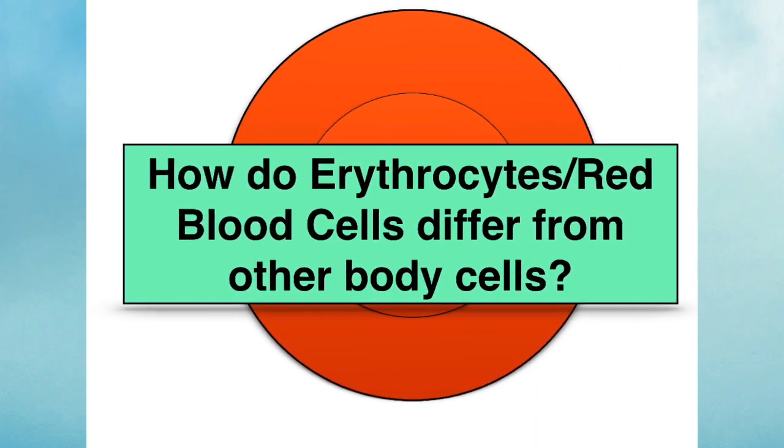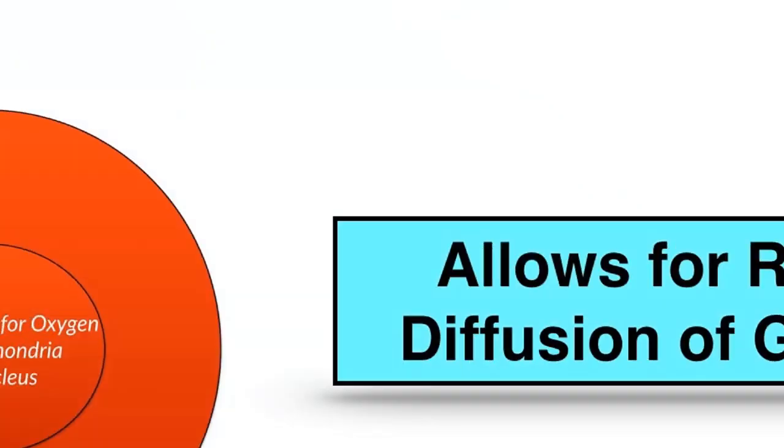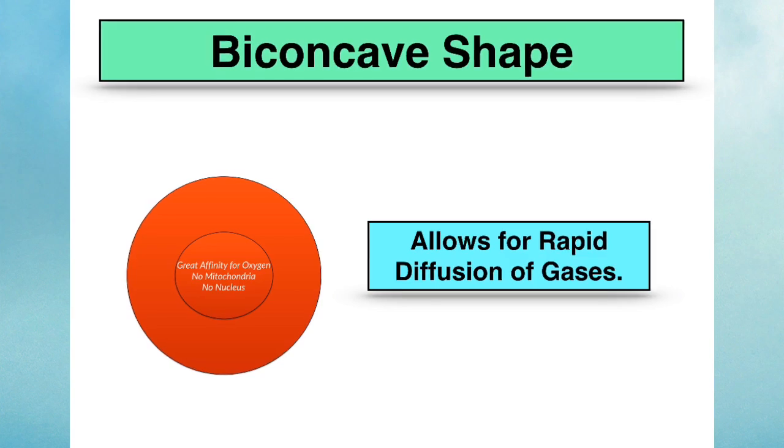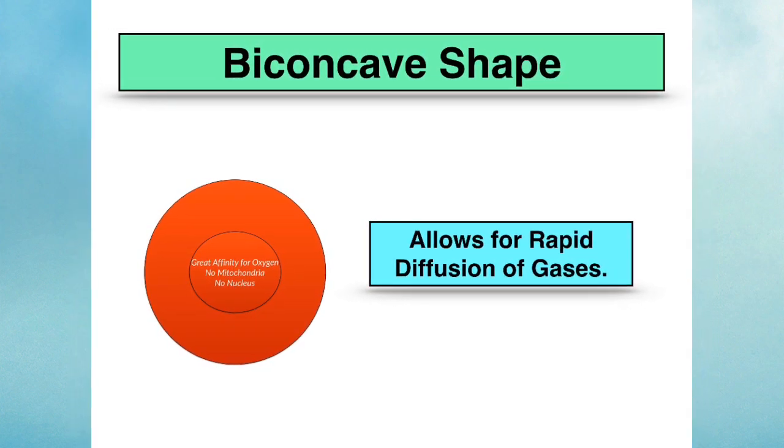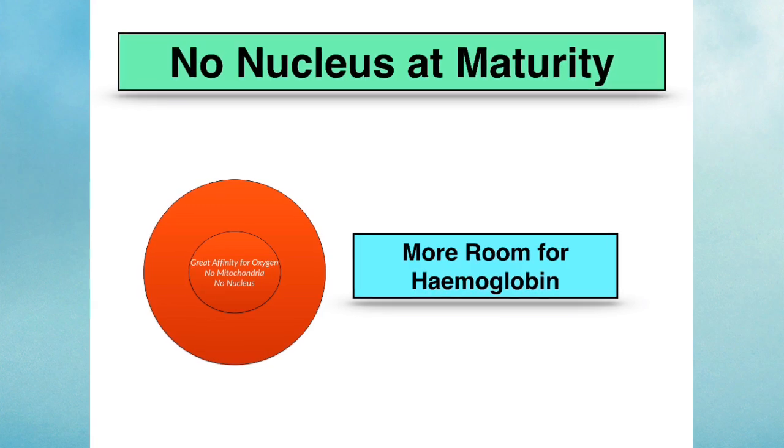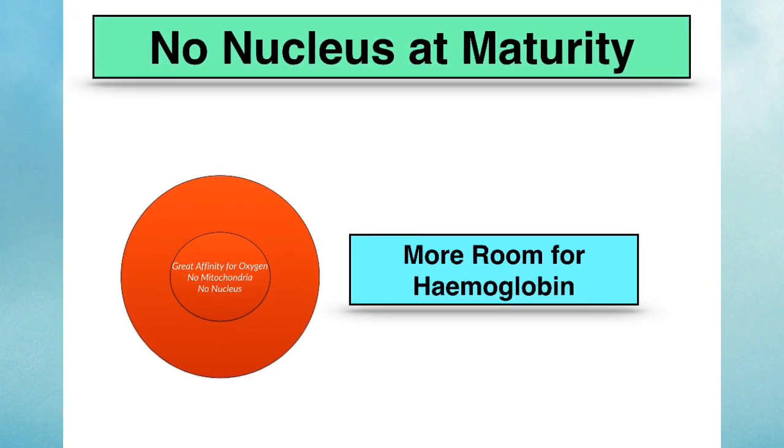Erythrocytes are very unusual types of cells, and a question that's often asked is how do they differ from other body cells? Firstly, their shape is a little bit unusual. They are biconcave, and this allows for the rapid diffusion of gases. Red blood cells have no nucleus at maturity, and this is to make room for as many haemoglobin molecules as possible.